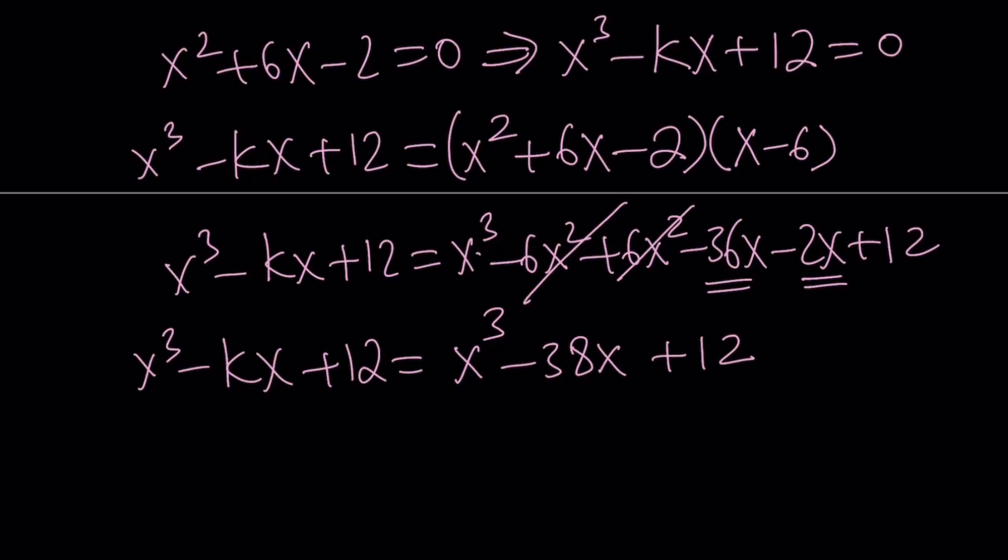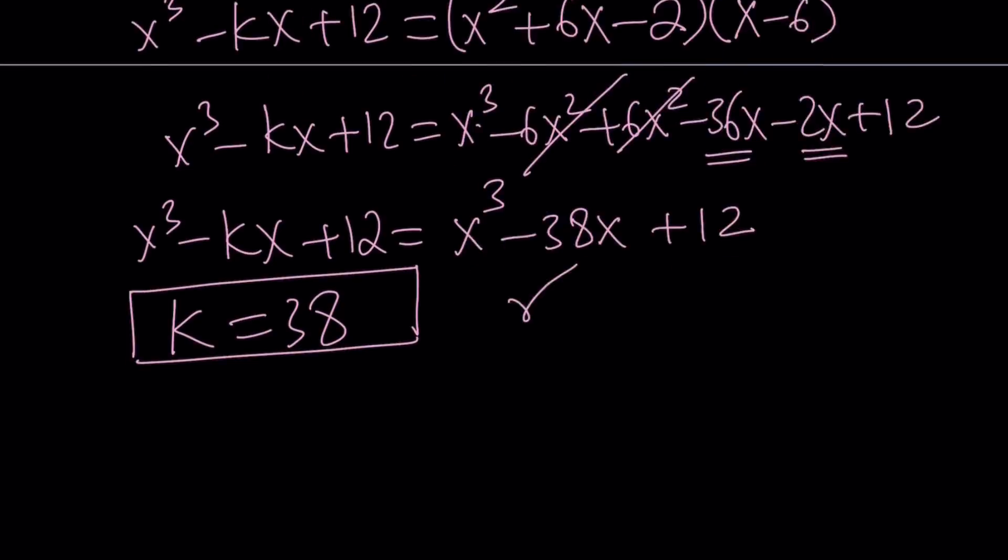And these are two polynomials that's an equation that's true for all values of x, which means k equals 38. And guess what? We were looking for the k value and we just found it. Awesome. Let's take a look at the third method now.